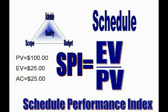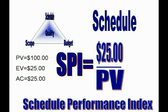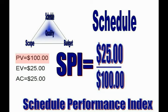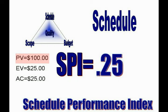The schedule performance index is calculated by dividing earned value by planned value. In our example, we earned $25 of value on a task that has a $100 planned value, so our schedule performance index is 0.25, which indicates serious schedule problems.